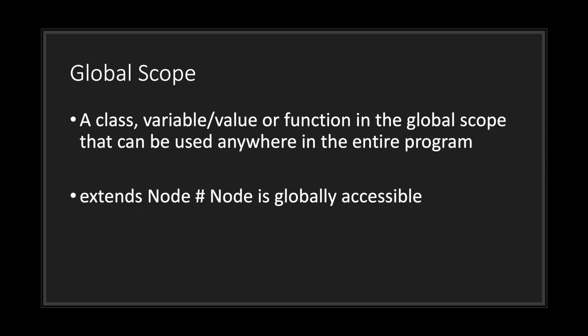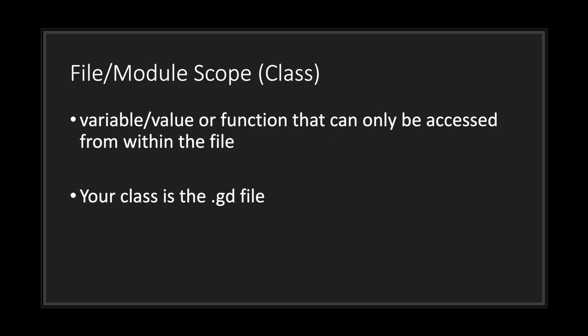A global scope is a class, variable, value, or function that can be used anywhere in the entire program. An example would be the Node class, which is globally accessible. Your class scope is basically variables, values, or functions that can only be accessed from within the file — in this case your .GD file since you're programming in GDScript.